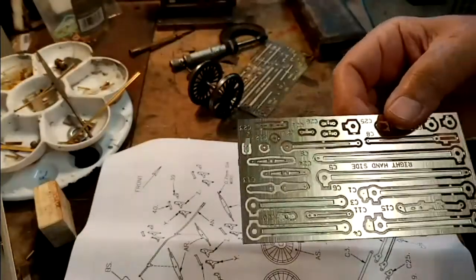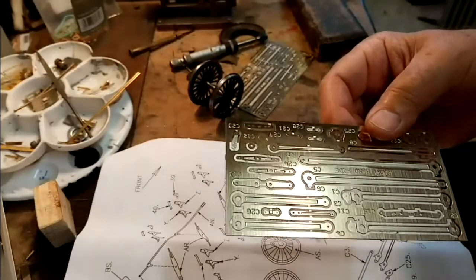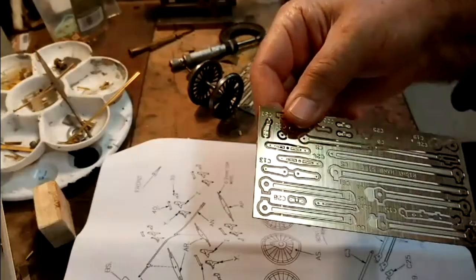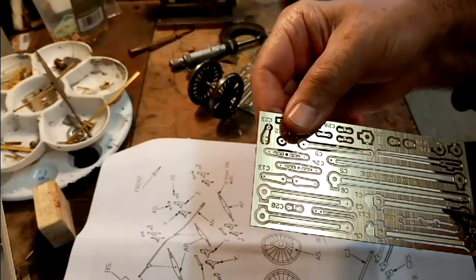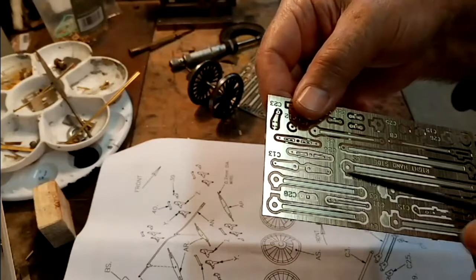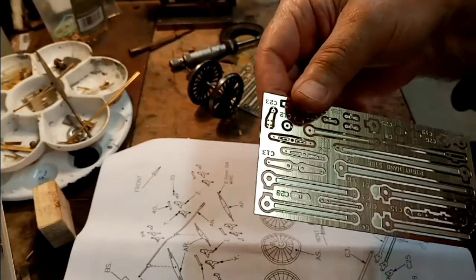I'm now going to make the coupling rods. This is one of the etches and I need to cut out these as a pair and solder them together, and those as a pair, and the bosses. This is just as the instructions.